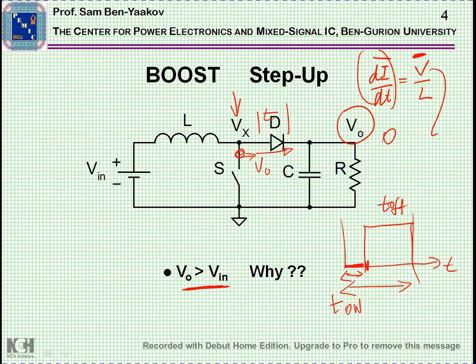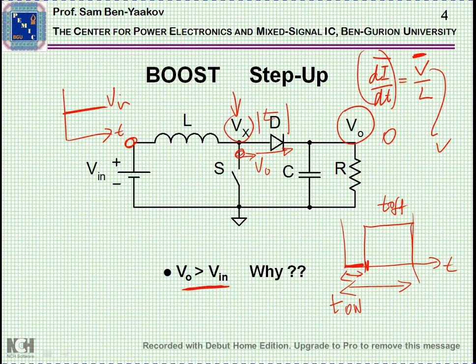...this requires that the average of the voltage will be zero. If I look at the voltage on this side, the average voltage is V in, because it is a constant voltage. Now, if I look at Vx, what I see is the picture we just talked about. In steady state, the average of this waveform must be equal to V in.